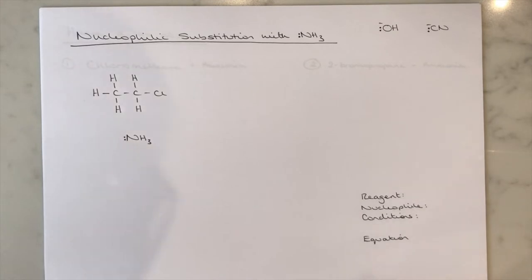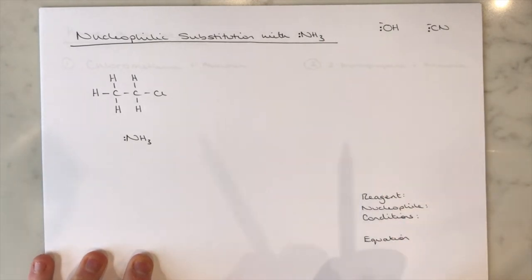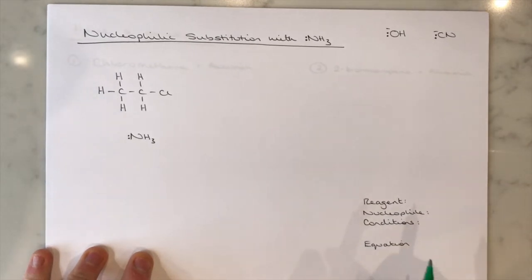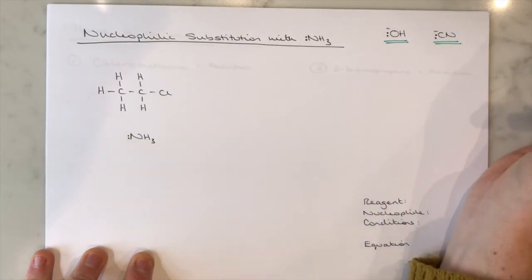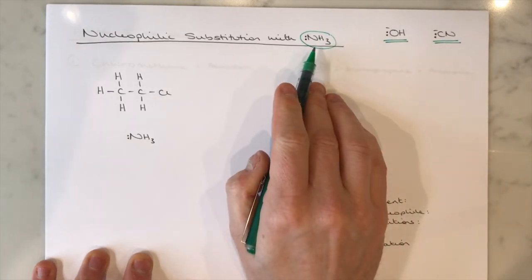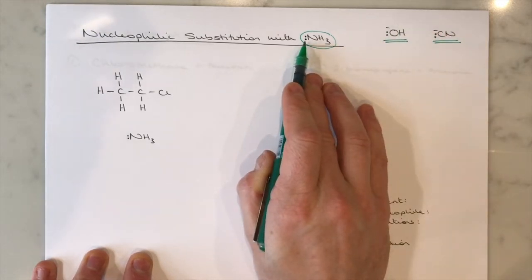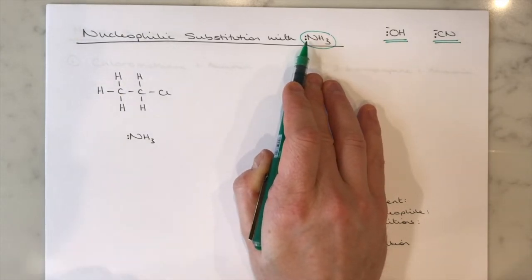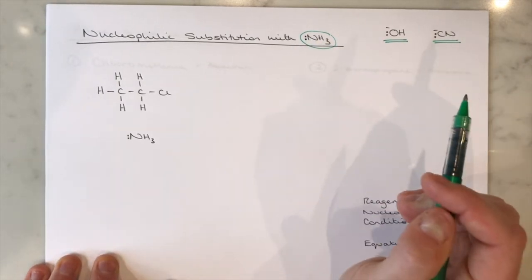Final variation of the nucleophilic substitution mechanism: nucleophilic substitution using ammonia. This mechanism has similarities but also a significant difference. We've already used hydroxide ions and cyanide ions as nucleophiles — those both carry negative charges. Ammonia, by contrast, doesn't have a negative charge; it's already a reasonably stable molecule. But the nitrogen has its own lone pair, which causes the key difference in the mechanism we're about to look at.